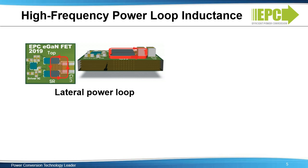For the lateral power loop design, the high-frequency loop inductances show little dependence on board thickness, because the power loop is completely contained on the top layer. The lateral design, however, is strongly dependent on the distance from the power loop to the shield layer contained on the first inner layer. Having a complete shield plane in close proximity to the power loop lowers the power loop inductance for this approach.